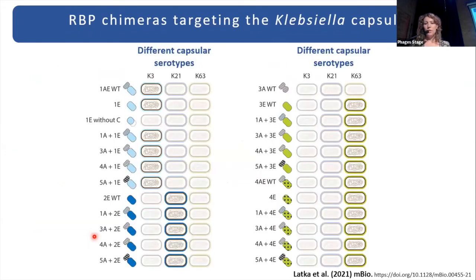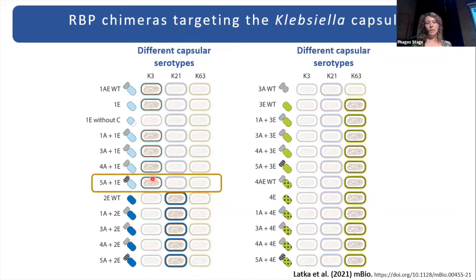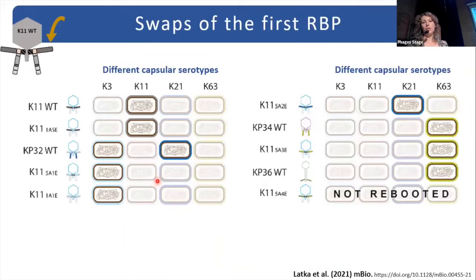When we checked for specificity, what we saw was that each time the chimera was specific to the same capsular serotype as the enzymatic part only. So the ANCHOR building block did not bring any additional specificity to the chimera. For instance, when we fused the ANCHOR building block originating from the K11-specific RBP with the K3 enzymatic part, the chimera was K3-specific only and not K11. We proved this, but that was only at the protein level.